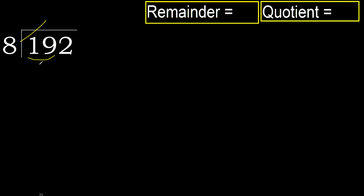8 multiplied by which number is nearest to 19 but not greater? 8 multiplied by 3 is 24 — 24 is greater, so try 8 multiplied by 2, which is 16. 16 is not greater. So 19 minus 16 is 3.